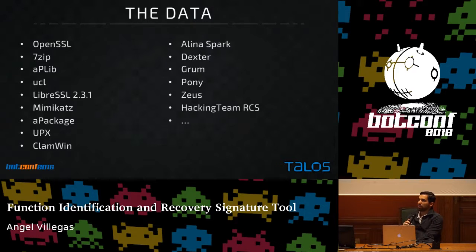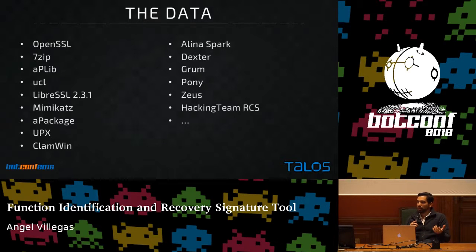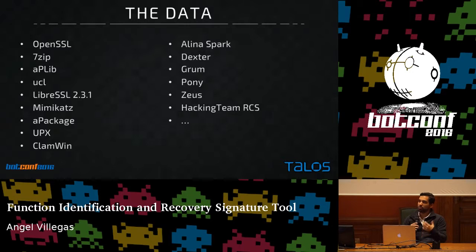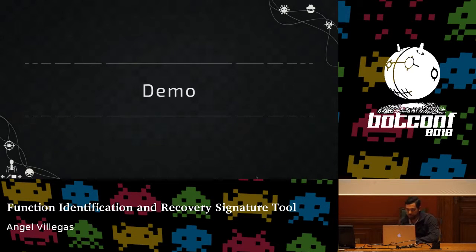A framework like this is only as good as the data associated with it. We've taken several open source projects, compiled them with various compiler flags and optimizations to get symbolic information, opened those compiled binaries in IDA, matched them with symbols, and uploaded that information to FIRST. This helps because quite often when looking at botnets or malware families, we see statically compiled OpenSSL functions and other libraries, even remnants of leaked source code in malware samples.